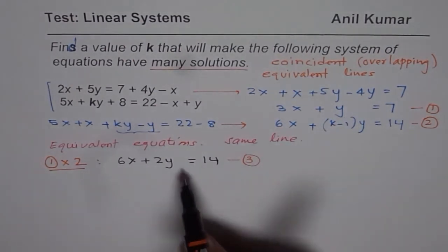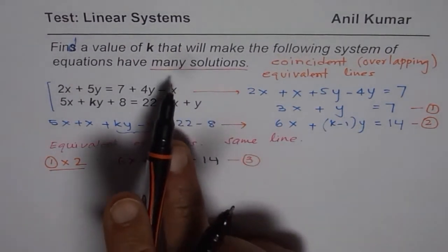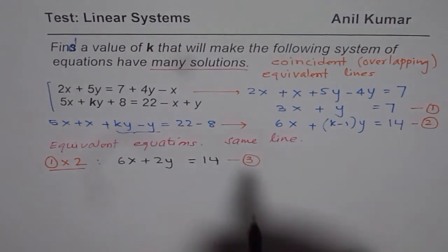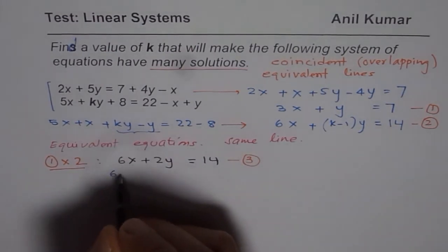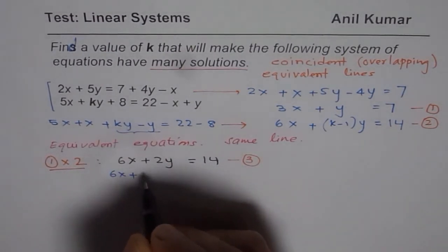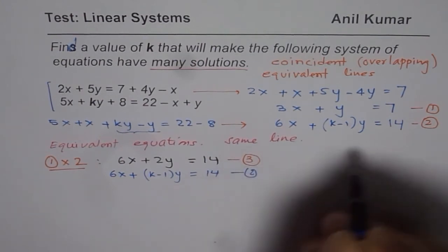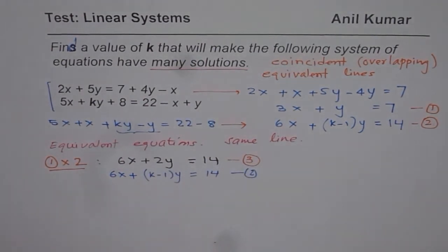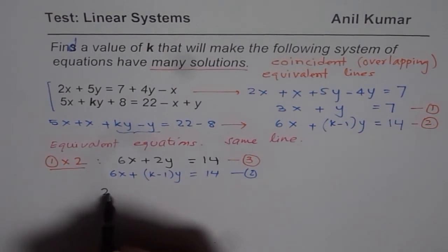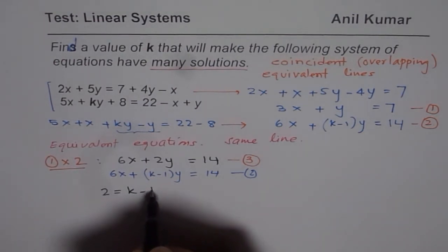Now since I want them to be exactly same, only then we have many solutions. If you compare the two equations, let me rewrite equation 2 again for you. So equation 2 for us is 6x plus k minus 1y equals 14. So when you compare these two, what do you find? To make them same, 2y should equal k minus 1y, or we have 2 equals k minus 1.